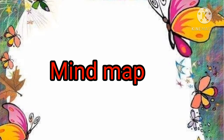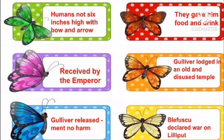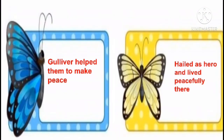Now let's see the mind map of the story. Gulliver, a doctor, went on a long journey. The ship was caught in a violent storm and broke. He reached the land of Lilliputians — tired and hungry, he slept for a long time. When he woke up, he found he was tied up. He saw humans not six inches high with bow and arrow. They gave him food and drink. He was received by the emperor and lodged in an old and disused temple. Gulliver was released when he was deemed to mean no harm. Blufesco declared war on Lilliput; Gulliver helped them make peace and was hailed as a hero, living peacefully there.